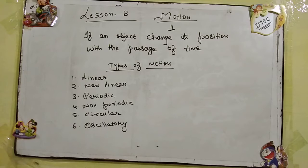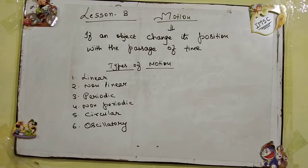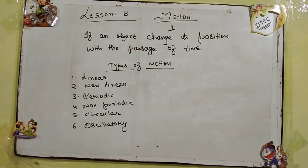Next comes periodic motion. Periodic means when an object covers a fixed path in a fixed time — that is known as periodic motion. For example, fan blades rotating at a set speed, or the earth's rotation covering a fixed distance in fixed time. Next is non-periodic motion — any object moving non-periodically, like the movement of a swing whose time duration keeps changing.